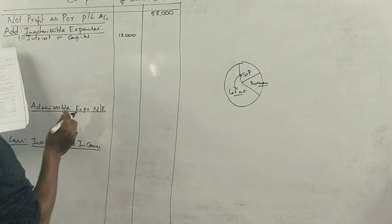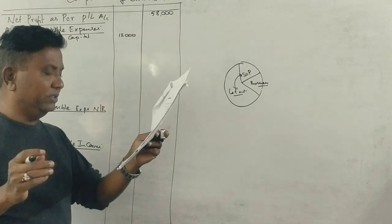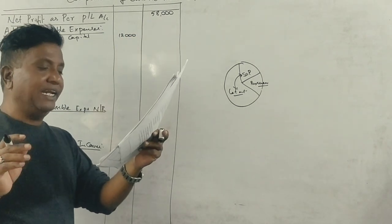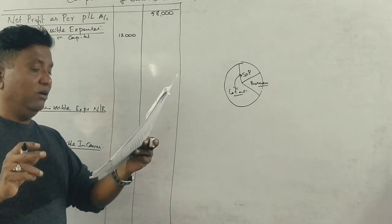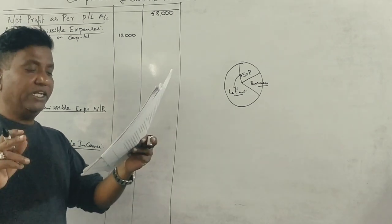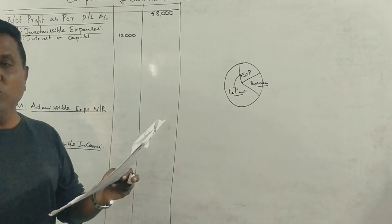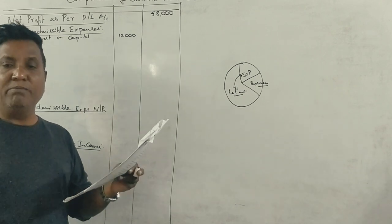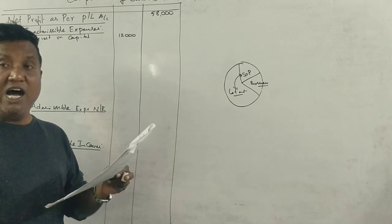Fire insurance premium is Rs. 3,000, which is related to house property. Since only 25 percent of the house property is used for business, only 25 percent of the fire insurance premium is admissible as a business expense.